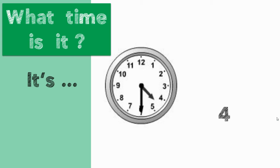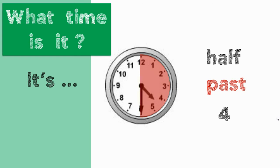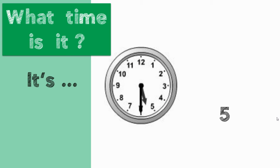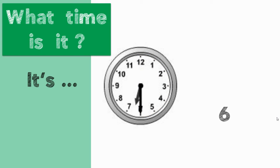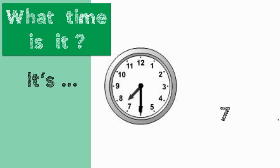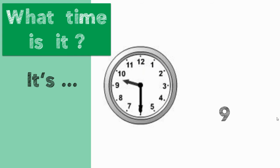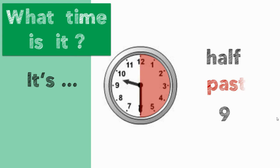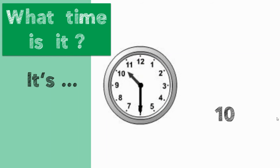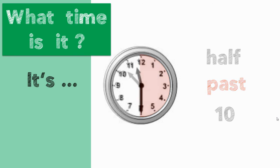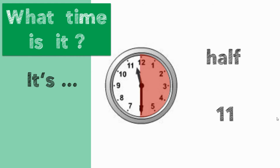This time it's 4 hours and 30 minutes — it's half past four. It's 5 hours and 30 minutes — it's half past five. It's 6 hours and 30 minutes — it's half past six. It's 7 hours and 30 minutes — it's half past seven. It's 8 hours and 30 minutes — it's half past eight. It's 9 hours and 30 minutes — it's half past nine. It's 10 hours and 30 minutes — it's half past ten. It's 11 hours and 30 minutes — it's half past eleven.